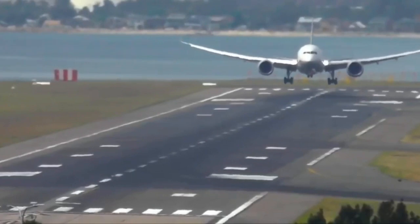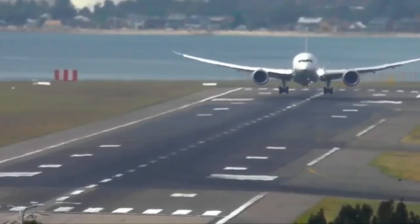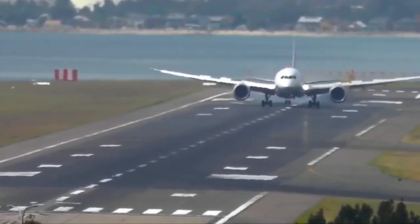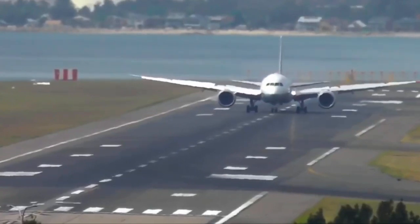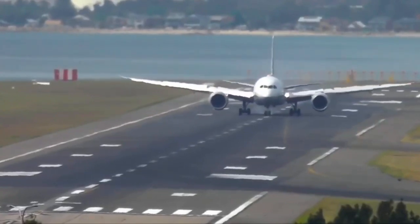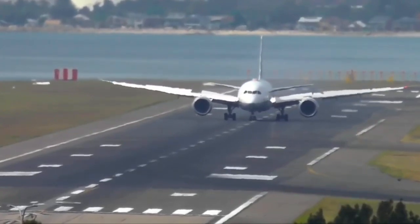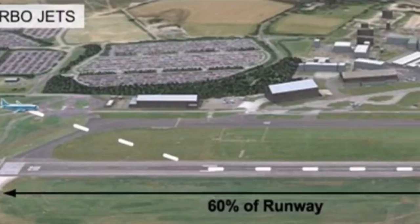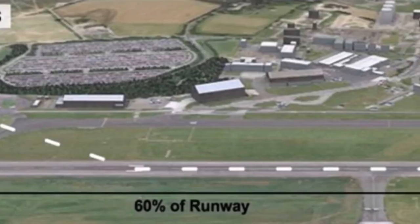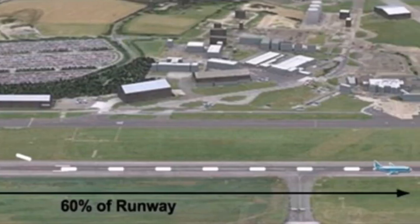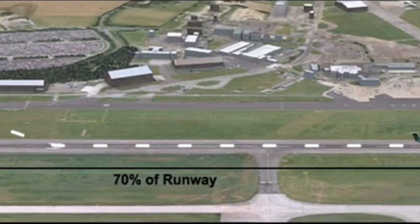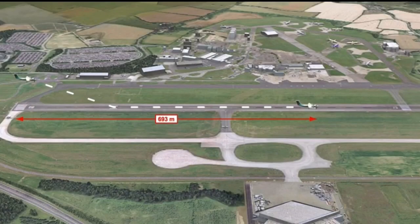The regulatory requirement for landing distance states that the operator must ensure the landing mass of an aeroplane allows a full stop from 50 feet above the threshold within 60% of the runway for turbojet engines and 70% for turboprop engines.